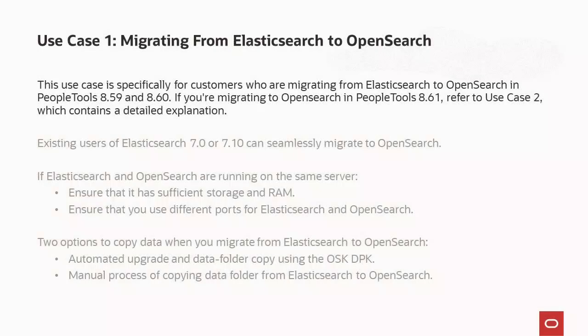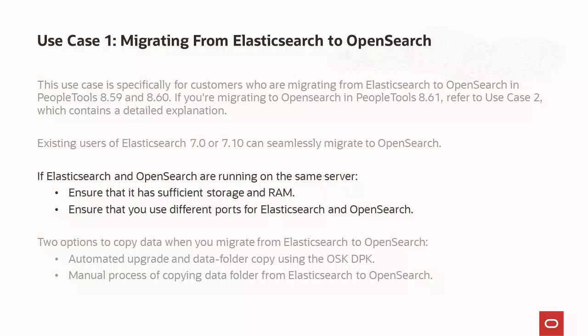This use case is specifically for customers migrating from Elasticsearch to OpenSearch in PeopleTools 8.59 and 8.60. The assumption is that you are already running Elasticsearch 7.0 or 7.10 in your PeopleSoft 9.2 application. You can install OpenSearch on a server different from the Elasticsearch server. However, if you plan to run both on the same server, ensure it has sufficient storage and RAM to sustain the additional volume of data, and use different ports for Elasticsearch and OpenSearch.